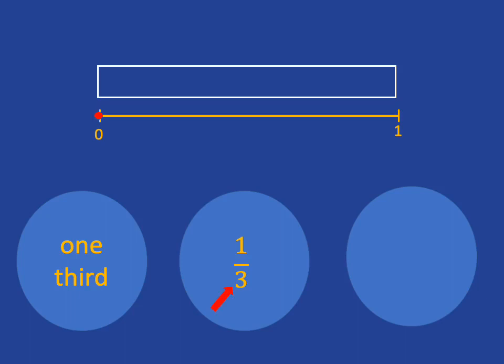The denominator of my fraction — three — tells me that I have to cut up my whole into three equal-sized pieces. So in my chocolate bar, I need to cut it into three equal-sized pieces. And on the number line, I need to take the length between 0 and 1 and cut it up into three equal lengths. The one in the numerator tells me I just want one of those pieces or lengths. So one third of the chocolate bar will be that yellow piece you can see there. And one third on the number line means I must travel one out of the three lengths between 0 and 1.